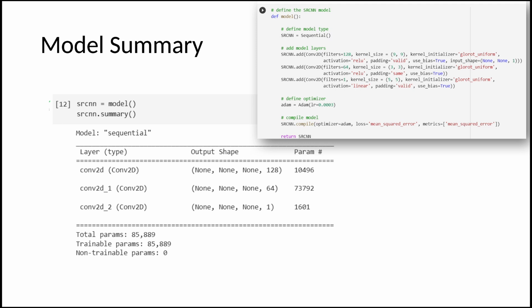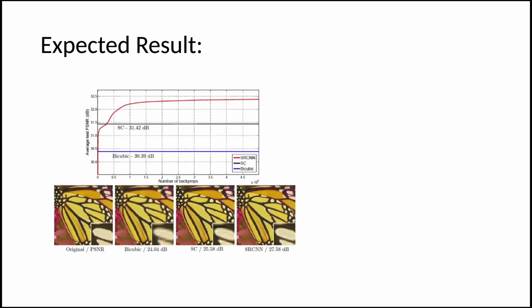The first layer will be a 9x9 convolutional layer, followed by a 1x1 — but we will be using 3x3 instead — and then followed by a 5x5 convolutional layer. Here we have a comparison of the SRCNN model, bicubic interpolation, and sparse coding model on average peak signal-to-noise ratio as an image quality metric, and clearly SRCNN outperforms the two.